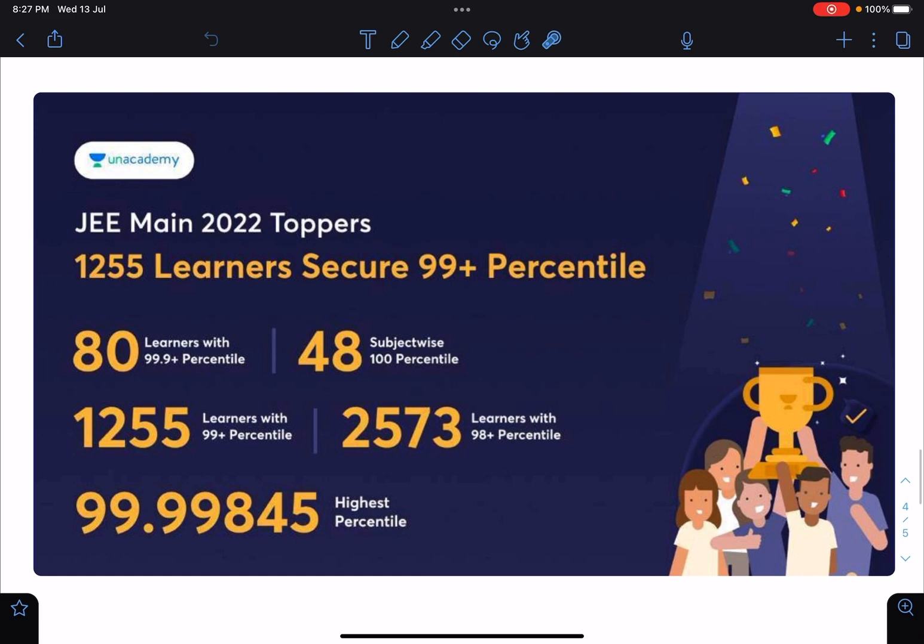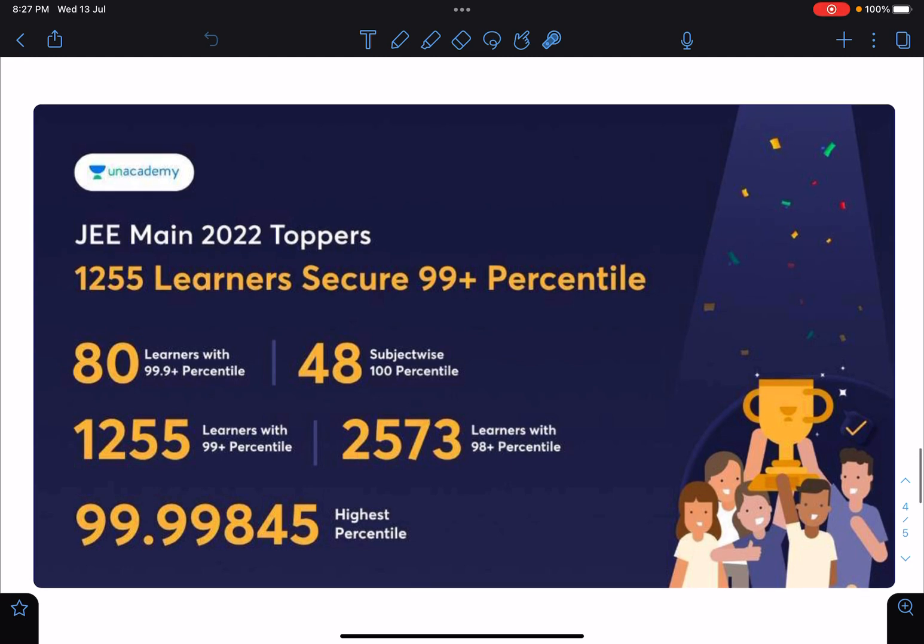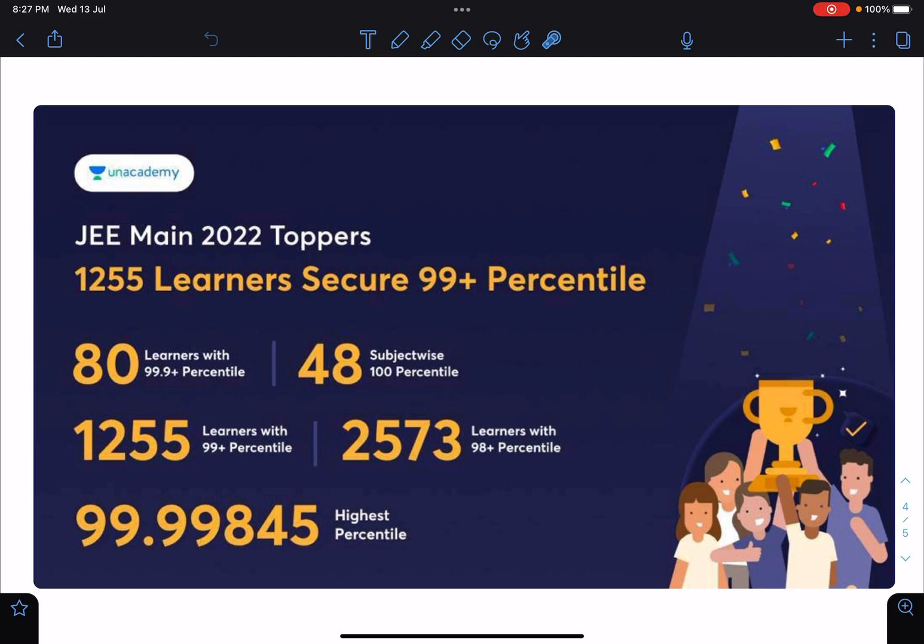We have really amazing results in JEE Main 2022. There are 1255 learners above 99 percentile, 80 learners with 99.9 plus percentile, and 48 learners having 100 percentile in any of the subject. So it's a huge number. And for 98 percentile above there are 2573 students, and highest percentile from the academy is 99.99845.